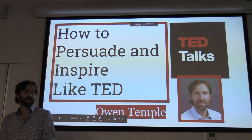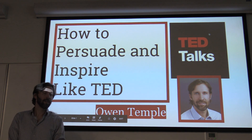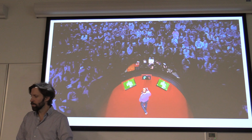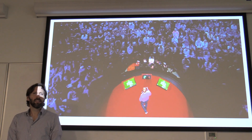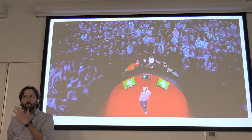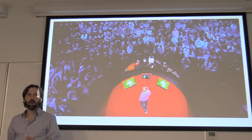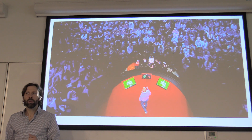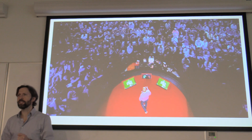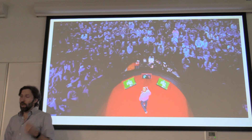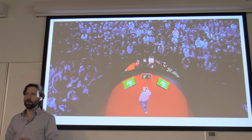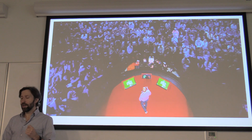Hello, I'm Owen Temple and I'm a data scientist. I want you to imagine there's a red circle on the stage, a timer counting down, an audience of experts and leaders watching you, waiting for you to speak. What words do you say? Or more importantly, how do you say them? Whether or not you ever give a TED talk, whether you're a developer, a data scientist, or a recruiter, your job is to influence people and communicate — and so you need to know how to do that.